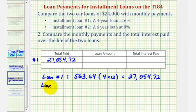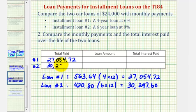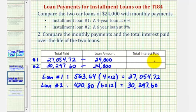For loan number two, the monthly payment is $420.80, but this is for six years, so the total number of months is six times twelve, or seventy-two. That comes out to $30,297.60 as the total amount paid for loan two. Both loan amounts were $24,000, so if we subtract that, we can determine the total interest paid for each loan.